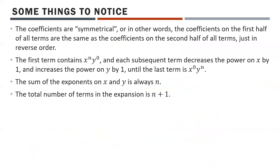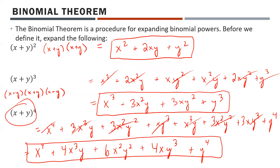Some things to notice before we build anything: the coefficients are symmetrical. The coefficients on the first half of all terms are the same as on the second half, just in reverse order. This is more clear with x plus y to the power of 4 — right in the middle we have 6x²y², and moving away from the middle the coefficients are 4, then 1 on each side. It's symmetrical.